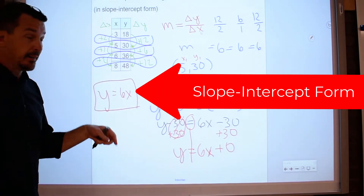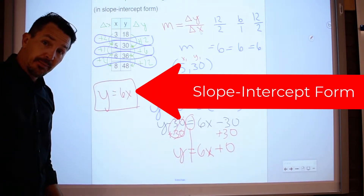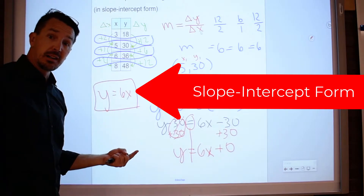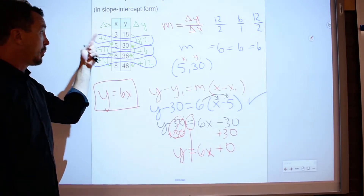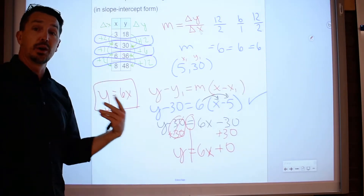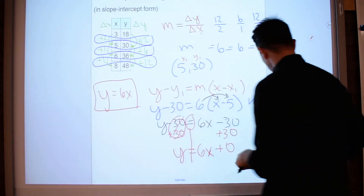So again, make sure the line is linear. Once you find a constant rate of change, then you can pick a point — any point — put it in point-slope form, simplify. You do the next one.